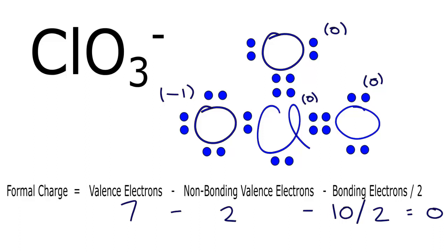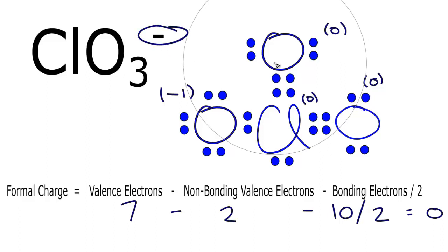We've now calculated the formal charges for each atom in the ClO3- Lewis structure. Looking at all formal charges together: zero plus zero plus zero plus negative one gives an overall formal charge of negative one. That makes sense, because we have the negative charge on our chlorate ion. So that's the Lewis structure for ClO3-.